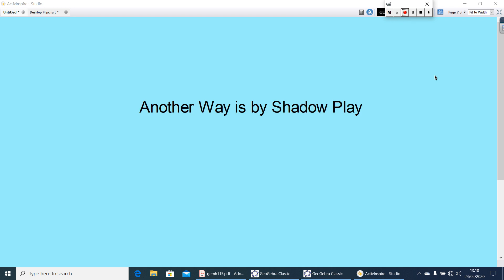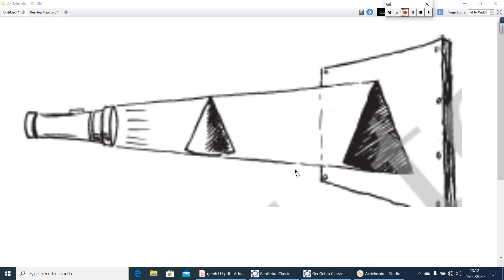Another way of visualizing a solid is by shadow play. Shadow play is, you keep a torch light just in front of a cone and focus on the wall. Now, what figure you will get? Here, you can see, the shadow will be in the form of a triangle. Now, if you keep a sphere here, then obviously, it will be a circle, and so on.